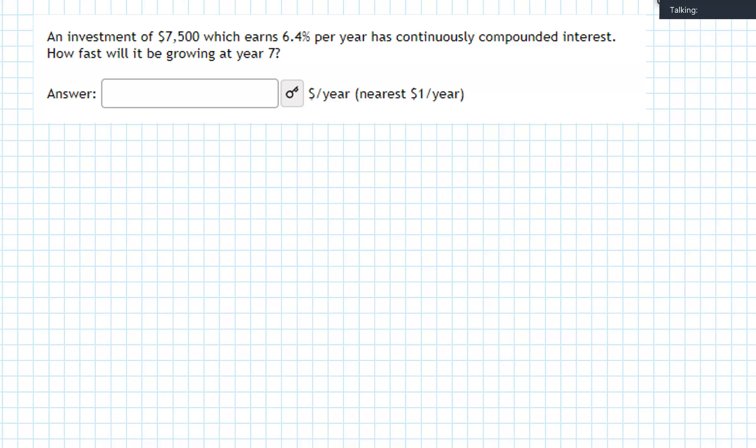So in order to do this question, we have to remember the formula for continuously compounded interest. And if you don't remember it, that's okay. We have y equals p times e to the power of rt. I'll quickly run through what each of these things represent.